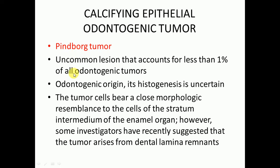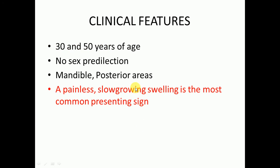Calcifying Epithelial Odontogenic Tumor, also known as the Pindborg tumor, is an uncommon lesion that occurs in less than 1% of all odontogenic tumors. It has odontogenic origin but its histogenesis is uncertain. The tumor cells bear a close morphologic resemblance to the cells of the stratum intermedium of the enamel organ. However, some investigators have recently suggested that the tumor arises from dental laminar remnants.